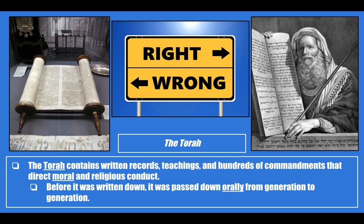The Torah, which I mentioned before, is one of the sacred books of Judaism. The Torah contains written records, teachings, and hundreds of commandments that direct moral and religious conduct — essentially telling them how to live moral lives and conduct themselves properly. Before it was written down, it was passed down orally from generation to generation, meaning they told stories by word of mouth. Here on the left, this is the Torah in scroll form as it would appear in a temple. On the right, we have Moses carrying the Ten Commandments. The center shows right or wrong, referring to the morals of the Jewish religion found in the Torah.